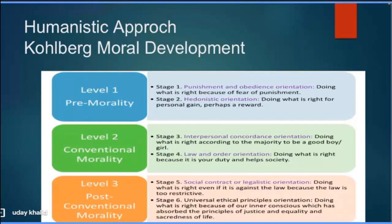Then comes post-conventional morality. The fifth stage is social contract and legalistic orientation — doing what is right even if it is against the law. Here the person begins to criticize laws, seeing that laws can be wrong and can be changed. The sixth stage is universal ethical principle orientation — doing what is right because of our inner conscience, which has absorbed principles of justice, equality, and the sacredness of life.